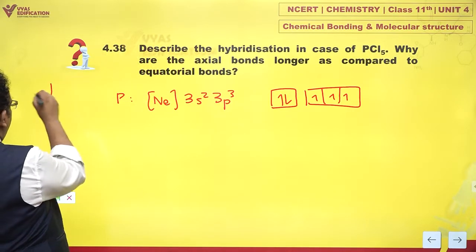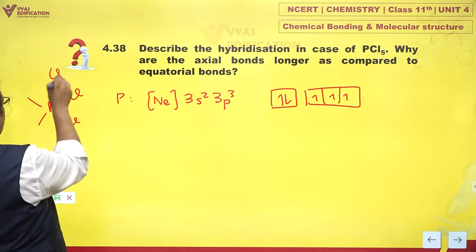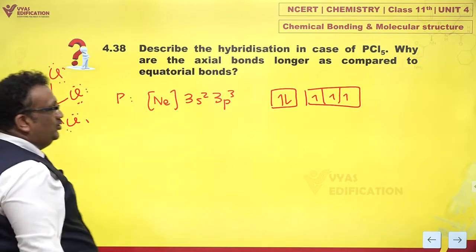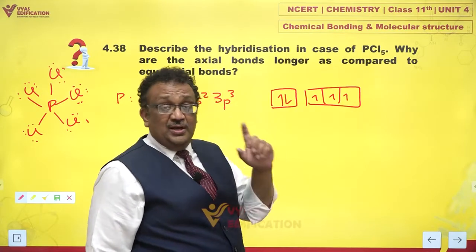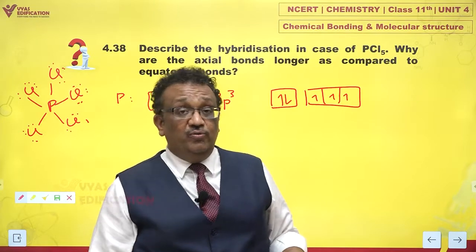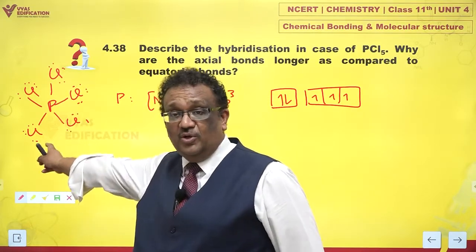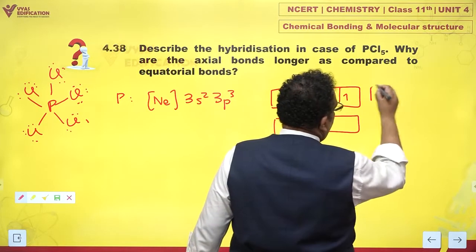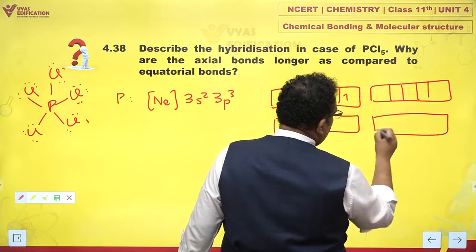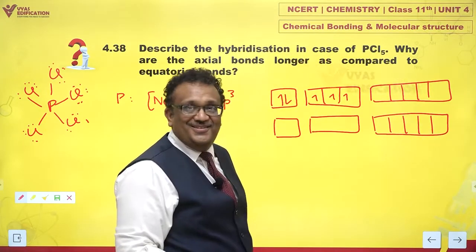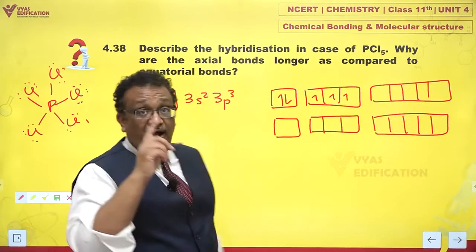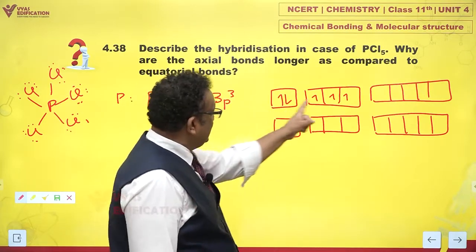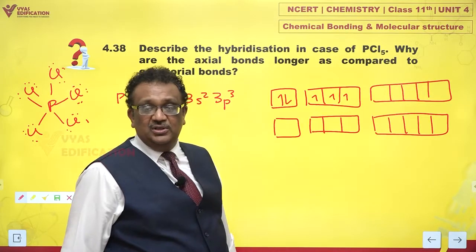If you want PCl5, just see the Lewis dot structure. Phosphorus has actually formed how many bonds? It has formed 5 bonds. But valence bond theory says you can use only half-filled orbitals for bond formation. By this logic, phosphorus in its ground state should be able to form only 3 bonds. But in PCl5, the number of bonds is 5.